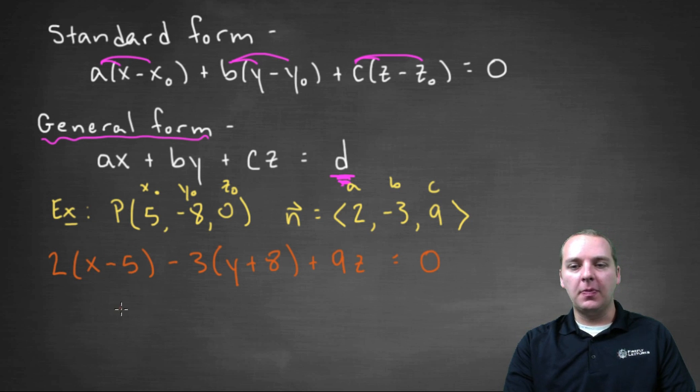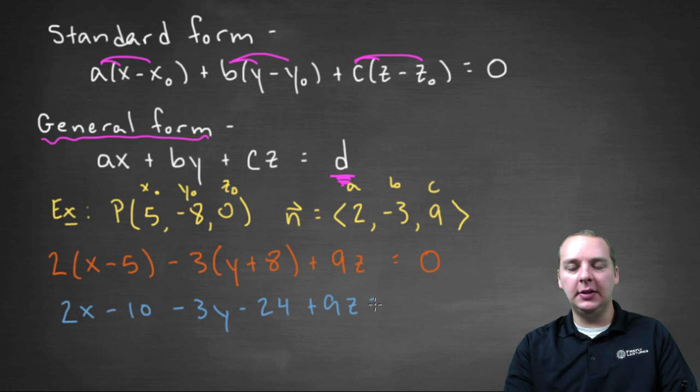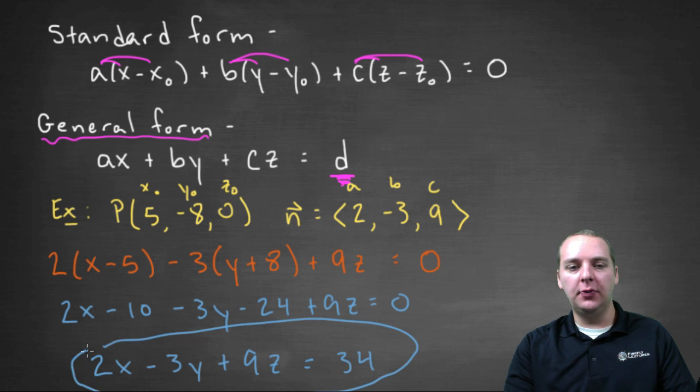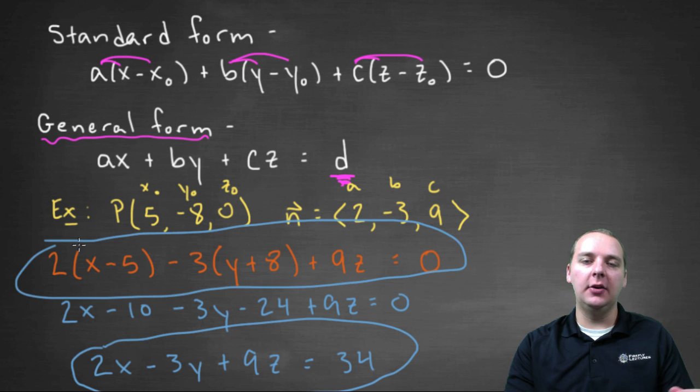So we'll distribute the two, and let me do this in a different color so we don't get confused. We'll have two x minus ten, minus three y minus twenty four, plus nine z equals zero. We'll keep the two x, we'll keep the minus three y, we'll keep the plus nine z. We'll add twenty four and add ten, so that'll be thirty four. And this is going to be general form, where this is the equation of the plane in standard form.